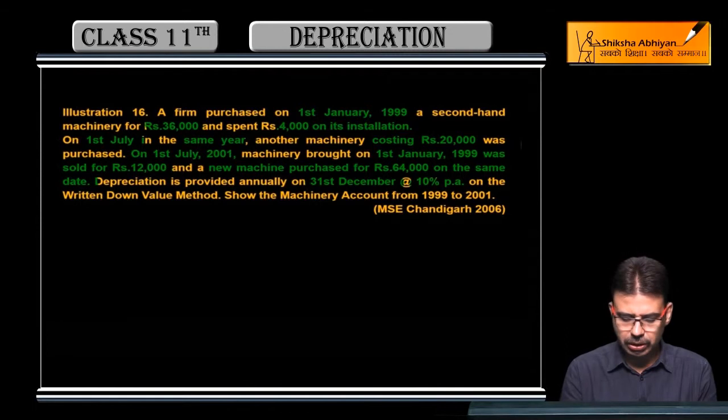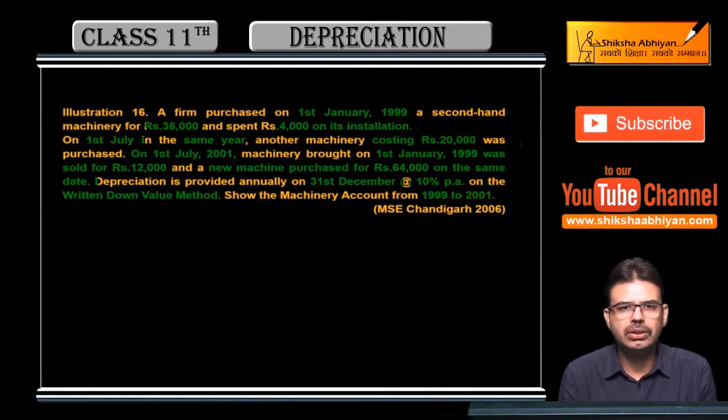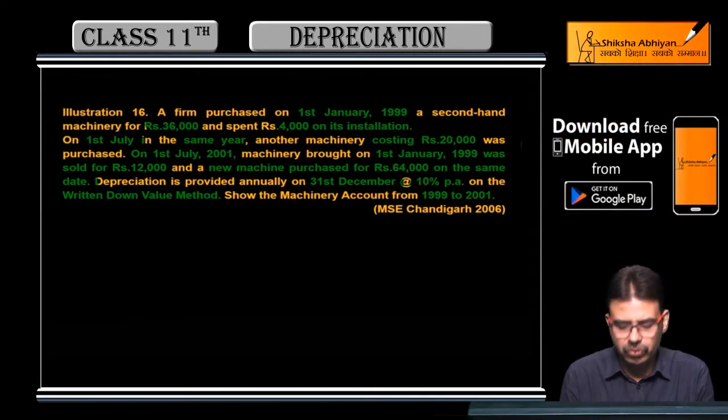It was 12,000 rupees sale and the new machinery was 64,000 same date purchase. 10% depreciation, 31st December year close. The written down value method for 1999 to 2001, 3 years account: 1999, 2000, and 2001.